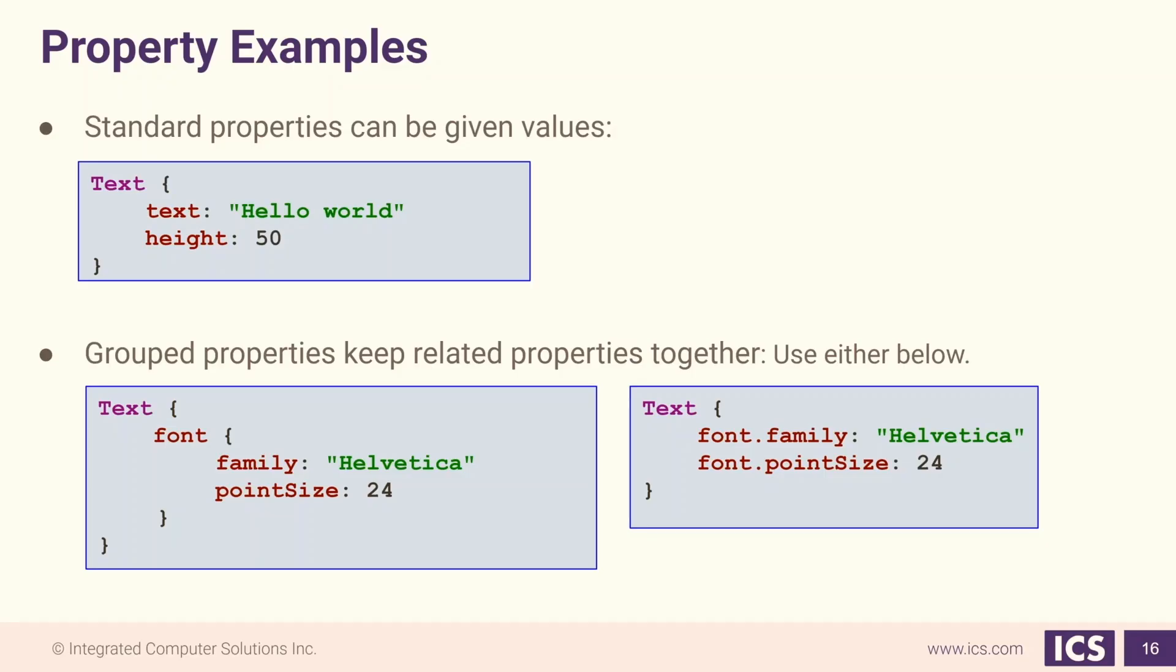There are two different kinds of properties in QML. First we have standard properties like height and width. Some types have their own additional properties, such as the text item which has a text property.